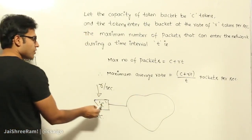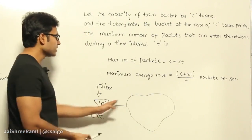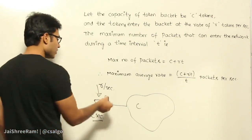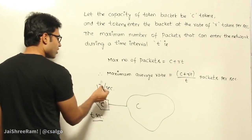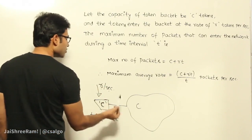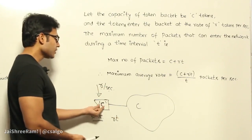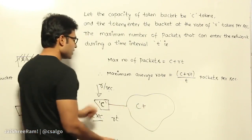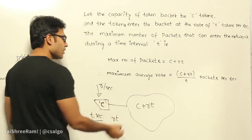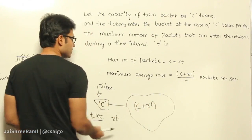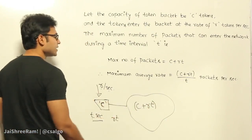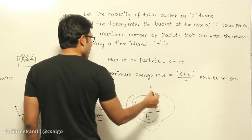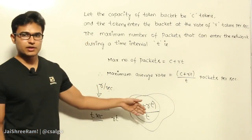Since you already have C tokens inside the token bucket, you can immediately send C packets. Now in T seconds, how many more tokens will be added? If R tokens are added per second, then in T seconds R×T tokens are added. Therefore R×T more packets can go out into the network. The total packets entering the network in time T is C + R×T. The maximum rate is this total divided by time T, which gives (C + R×T) / T. This is the maximum rate at which packets can enter the network — the maximum output rate of a token bucket.